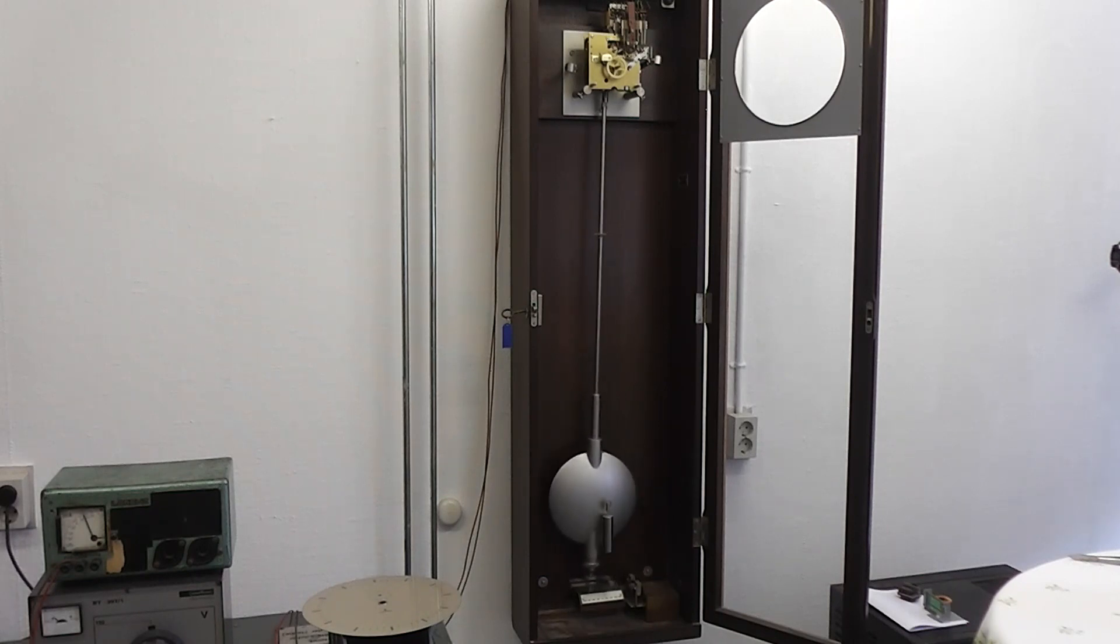There were actually two master clocks. The Germans call it Mutteruhr and these clocks can provide signals to so-called slave clocks, Tochteruhren.